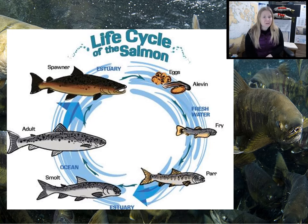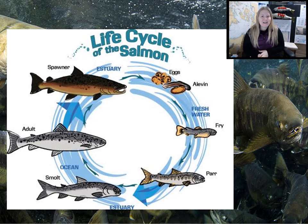We're going to learn about each of these stages today. The big picture is that salmon start as eggs laid in a gravel nest in fresh water. They hatch into alevin, grow into fry, leave the river and migrate into the estuary as smolts. Then they live in the ocean to grow big as adults, and then return as spawners to the river where they were born.